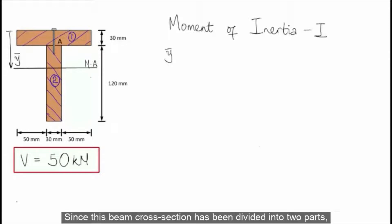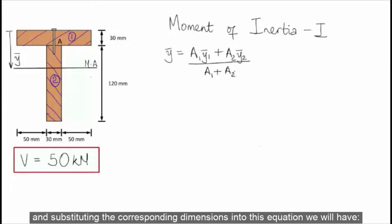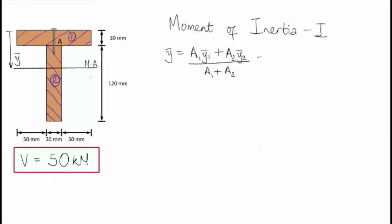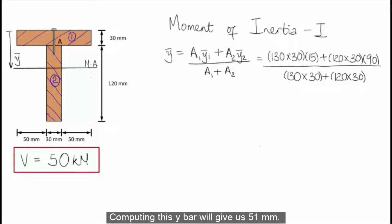Since this beam cross-section has been divided into two parts, we can write the formula for Y-bar. Substituting the corresponding dimensions into this equation and computing this, Y-bar will give us 51 millimeters.